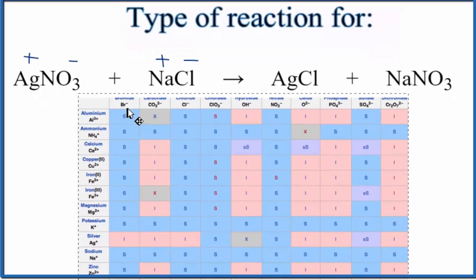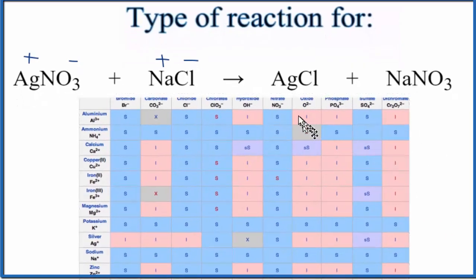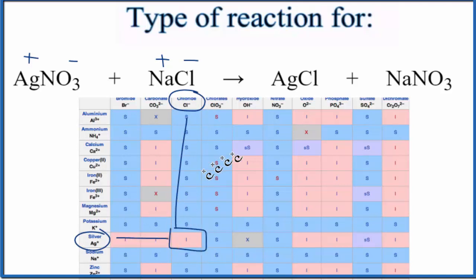So here's a solubility table. Let's see if we can find silver chloride. We go down. Here's silver. And over here is the chloride. So as we go down and across, we see that I. That means it's insoluble.